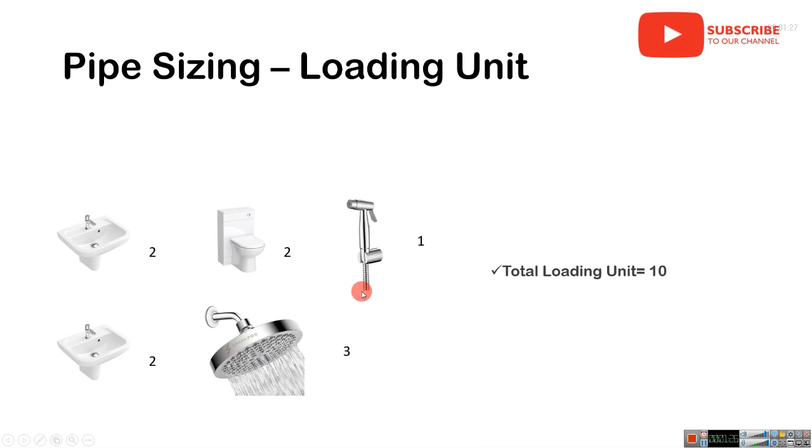Pipe sizing: think your bathroom has two wash basins, one water closet, and one bidet, and a shower. The total loading unit value is 10. It's the sum of this value and we get 10.